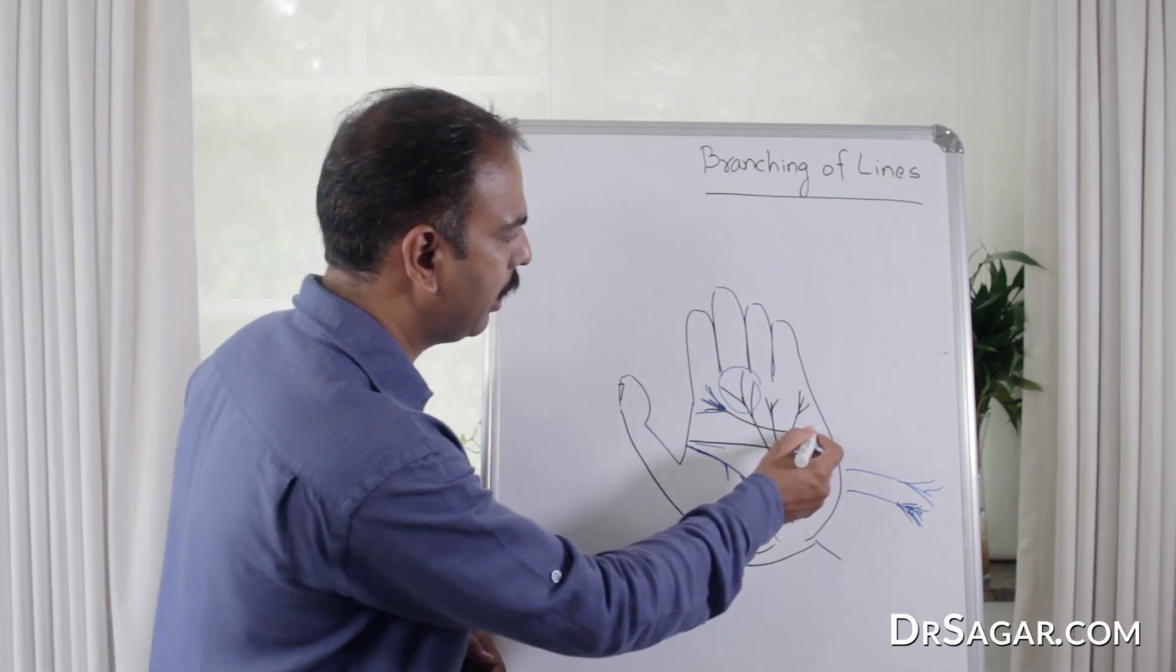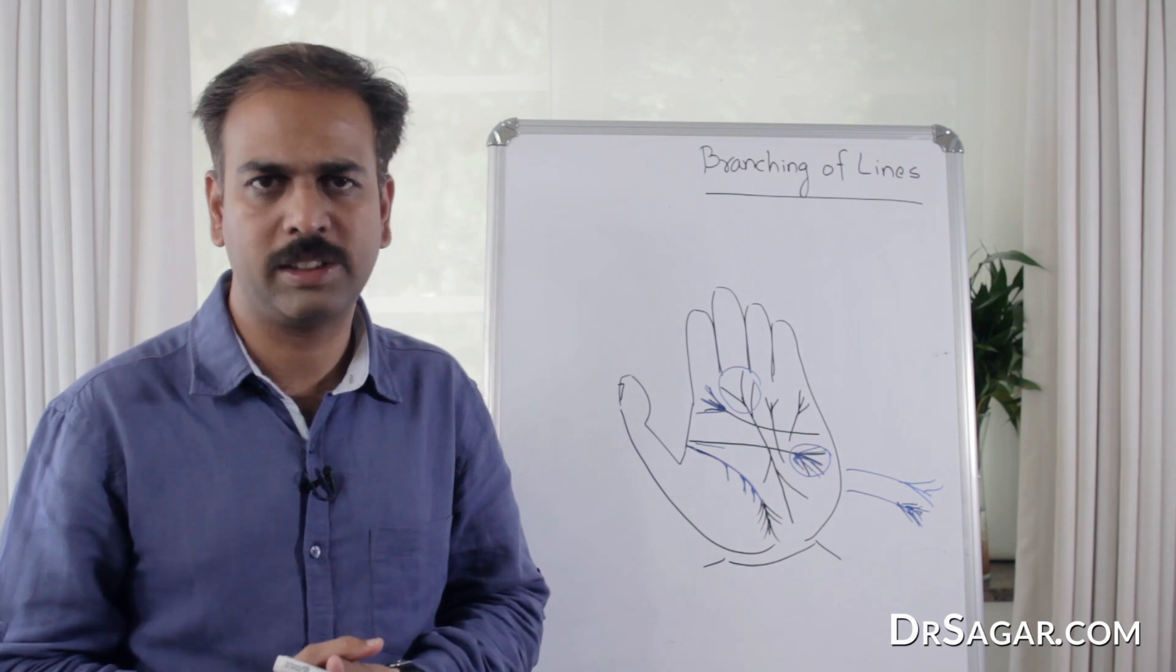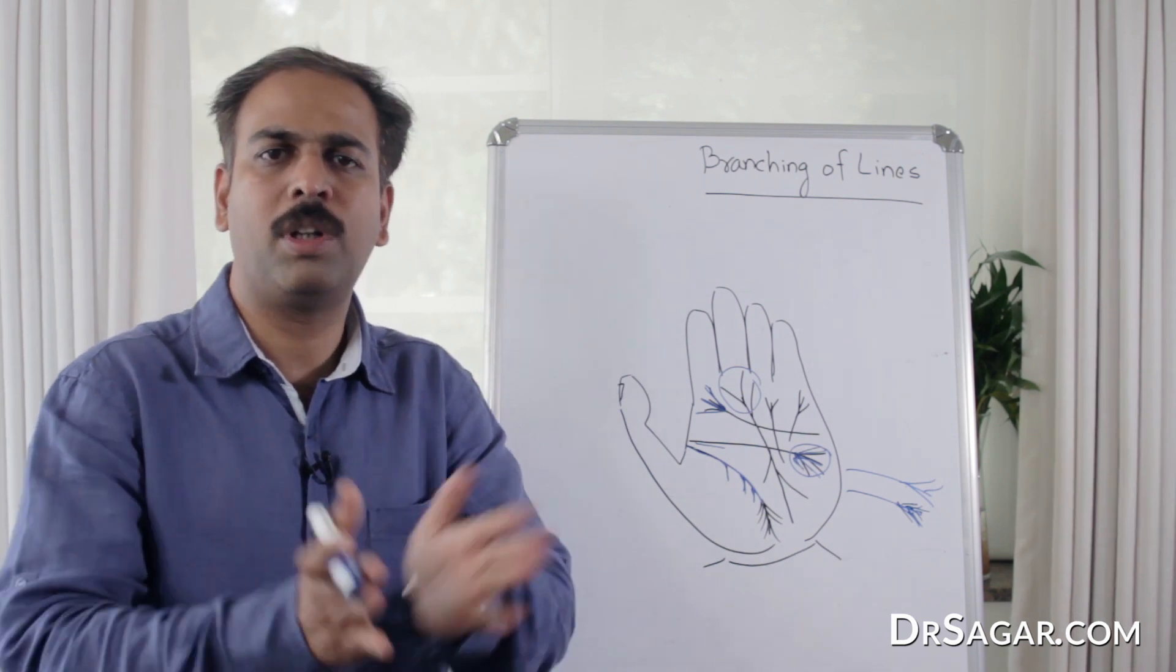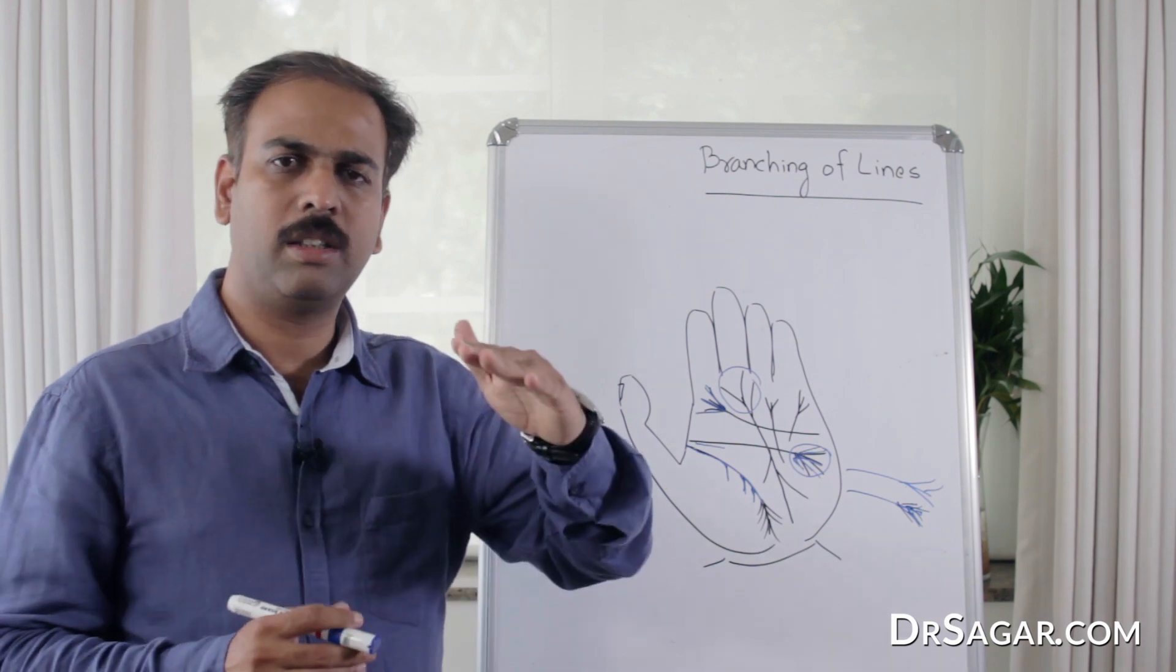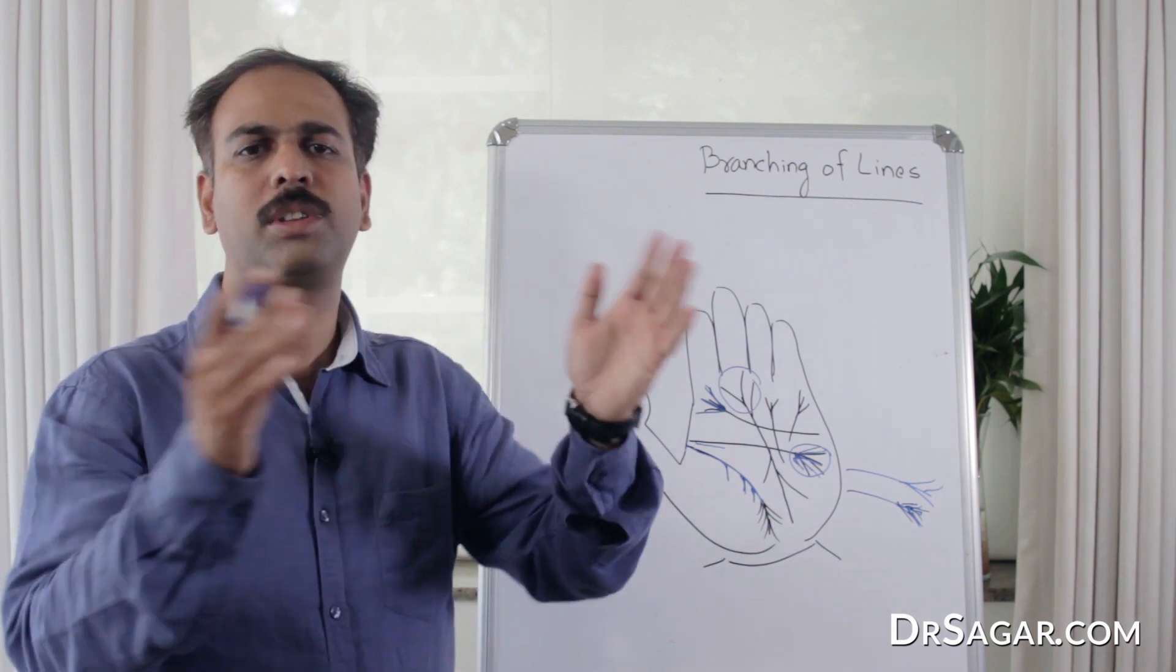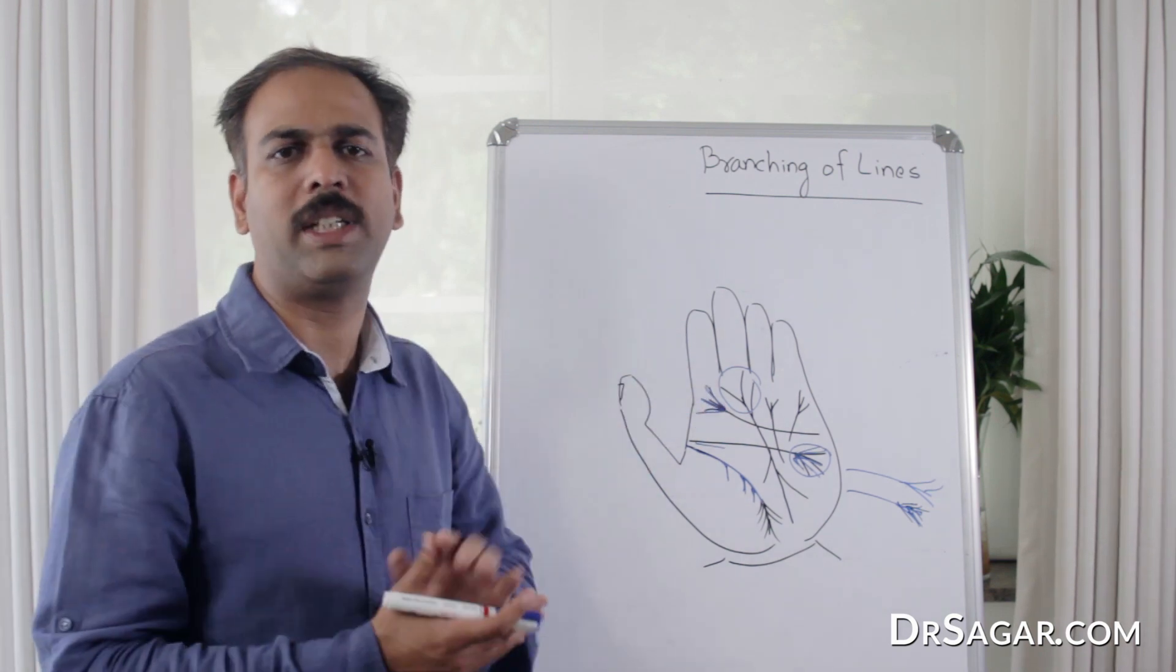Now we'll look at the heart line. The heart line shows our feelings. If the heart line has many branches, it shows that the person is social and connects well with people.